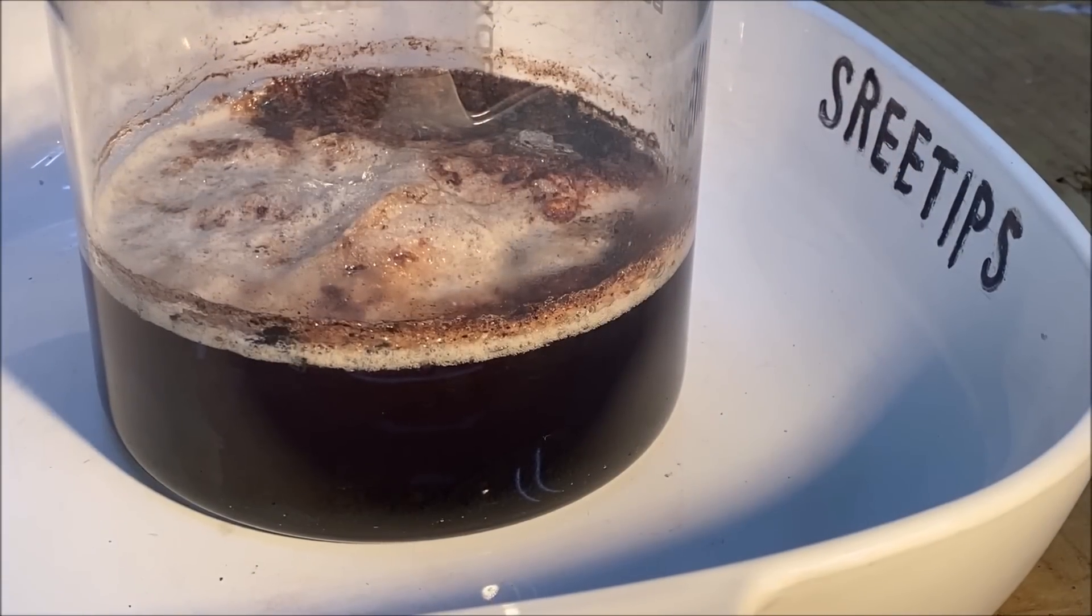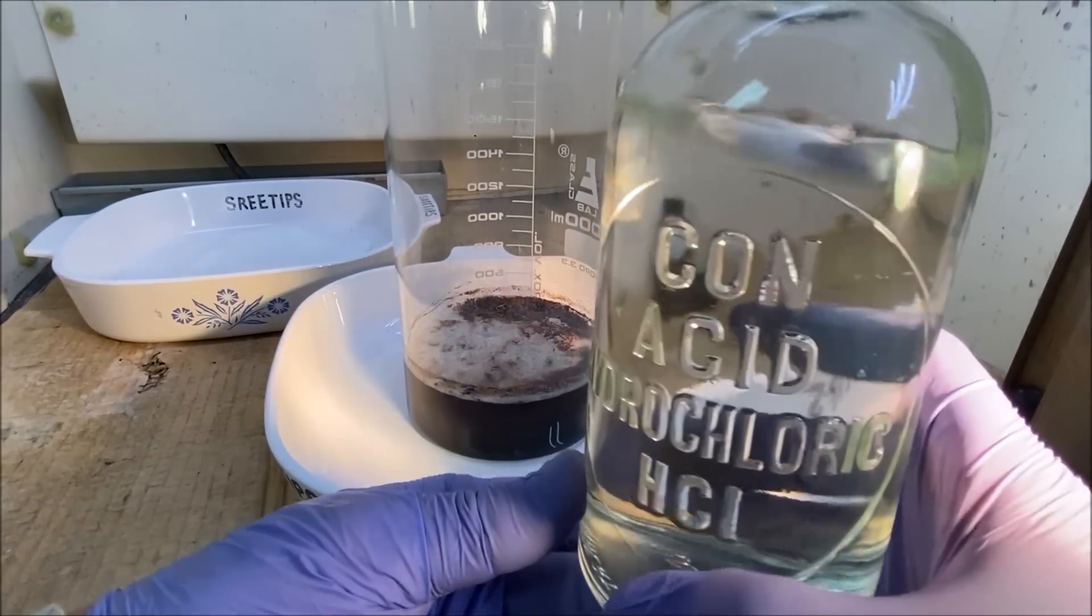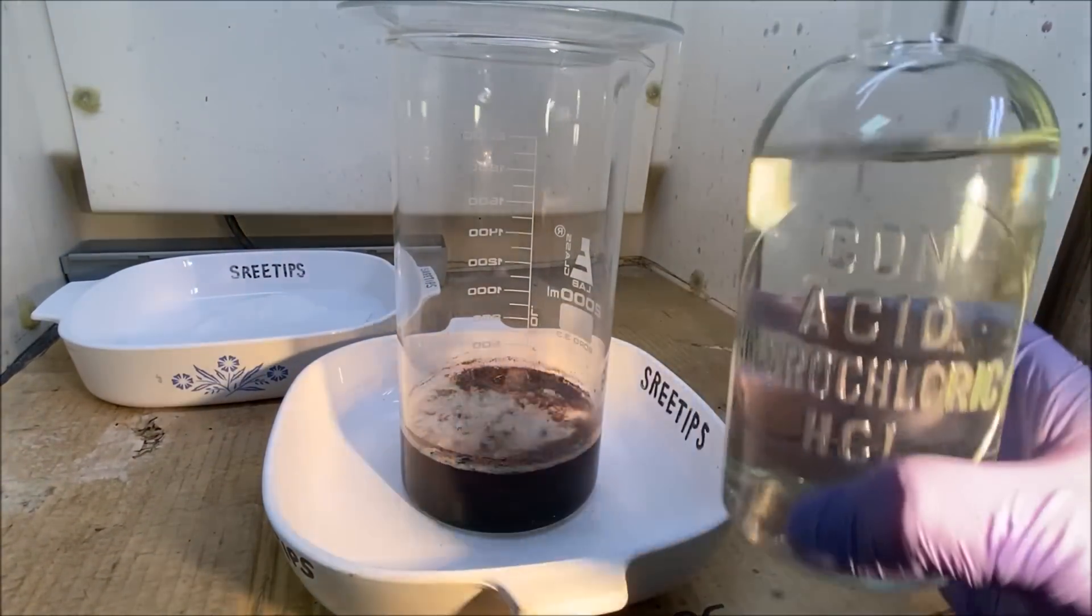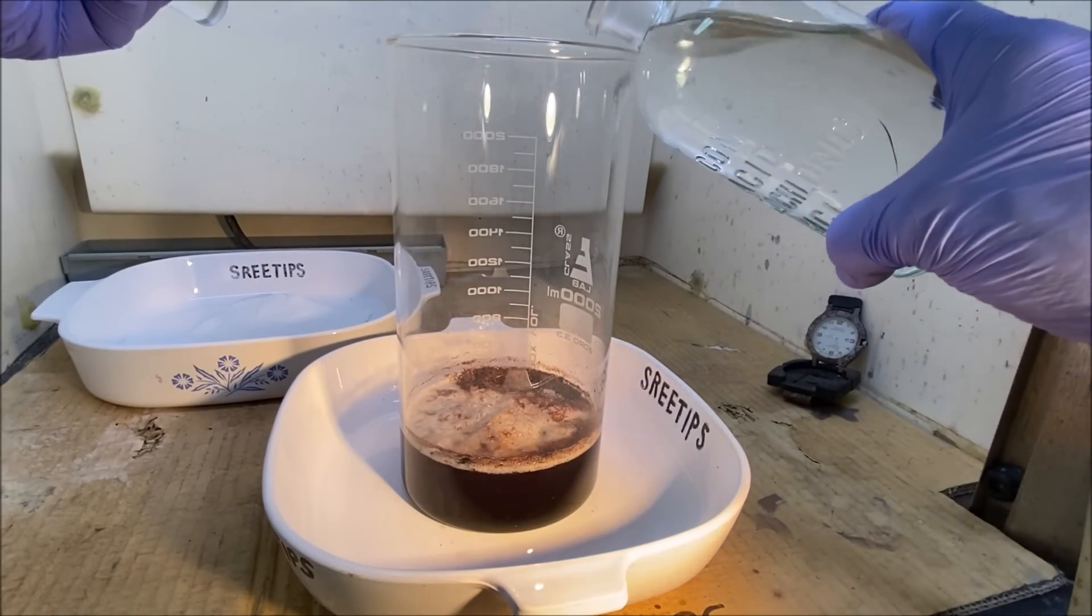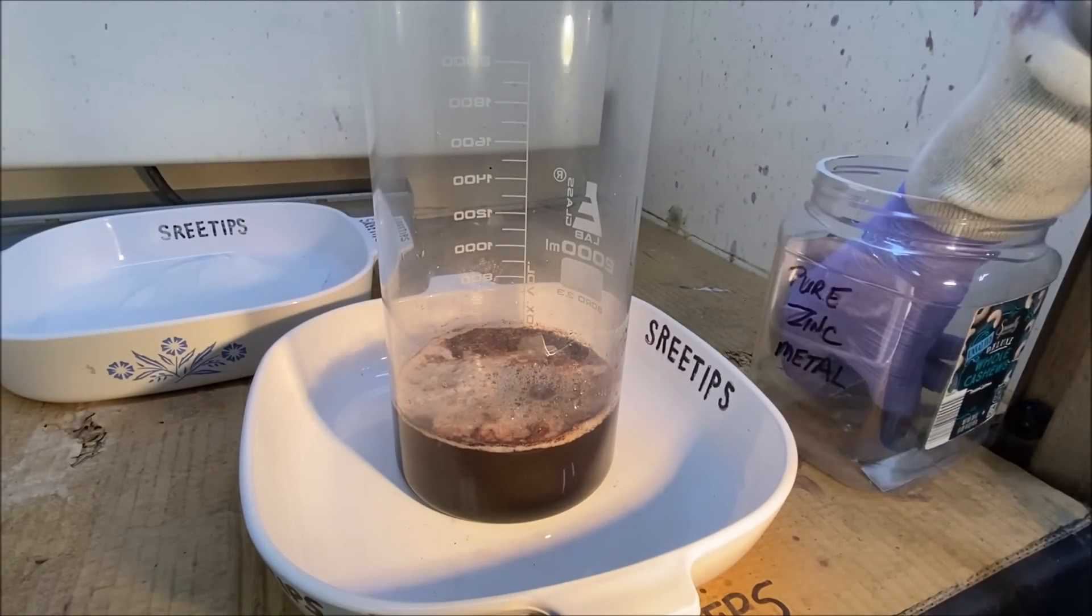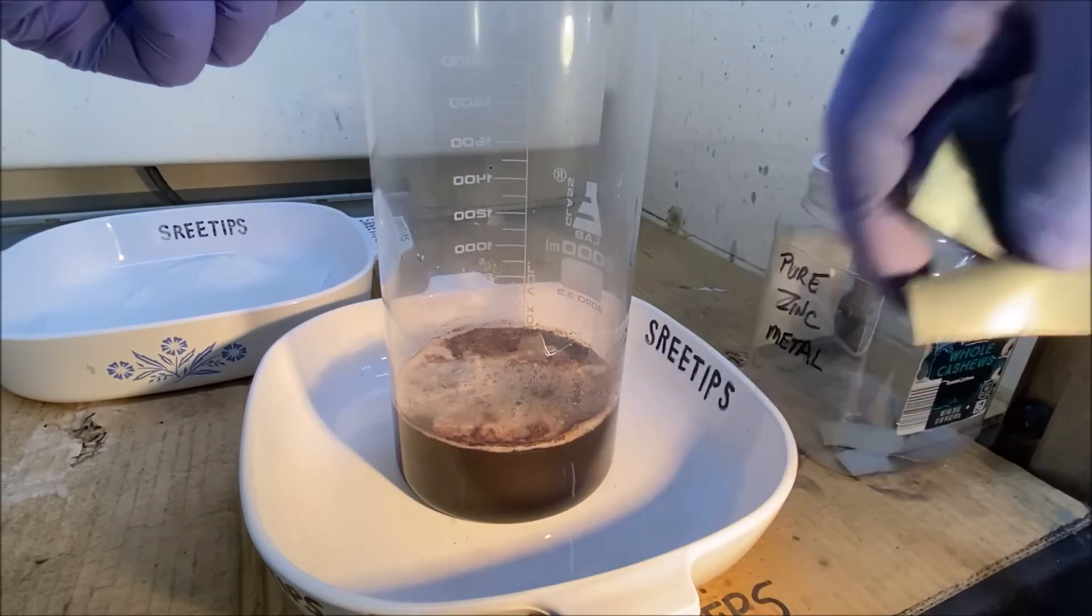First thing we want to do is add a little bit of hydrochloric acid to the solution. Not very much, just a little bit. Now I'll add a couple more pieces of zinc in here and get the rest of this solution to clear up.